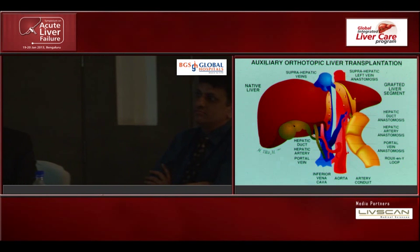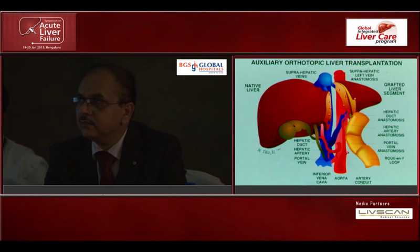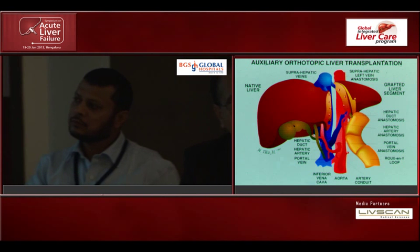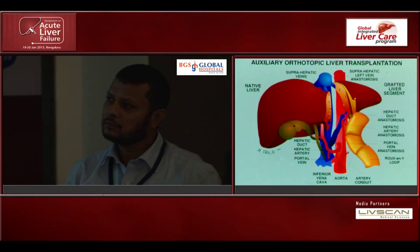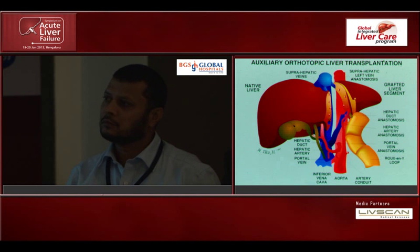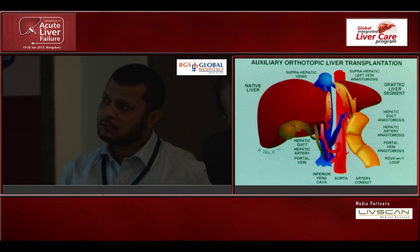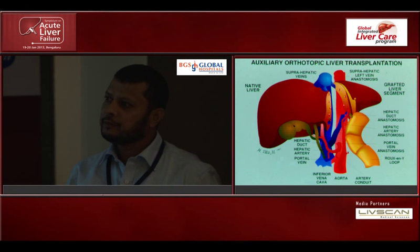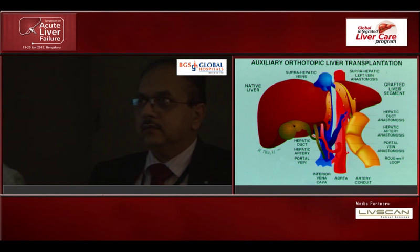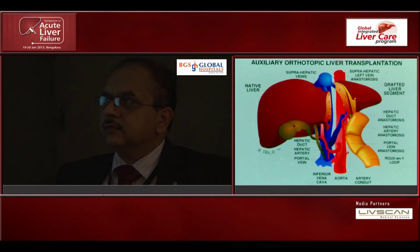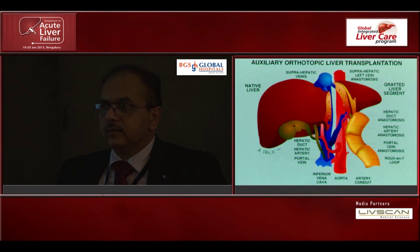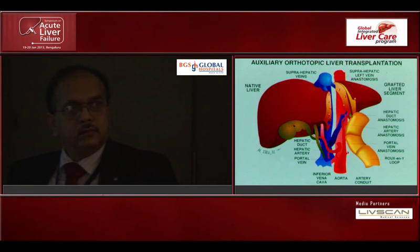I'll talk about some of the reasons why it was difficult — we struggled just like other people in the beginning — but we have come to a different situation now, because you need to understand disease processes to be able to apply this operation for the right patient. Not everyone would be suitable for it. So, what is auxiliary liver transplant? It is a situation where you do not remove the whole of the patient's liver; you keep some of the patient's liver and then give them a significant amount of liver depending on the disease for which you are transplanting.